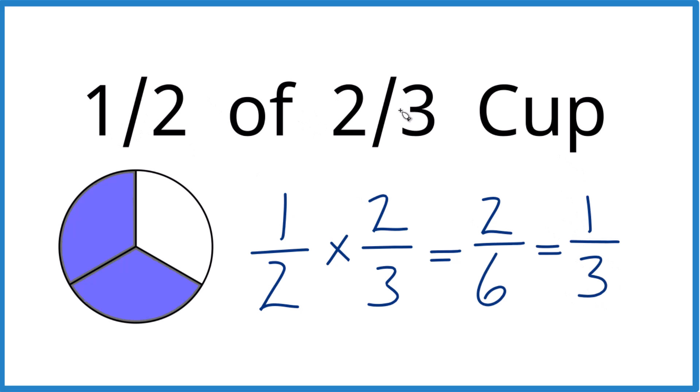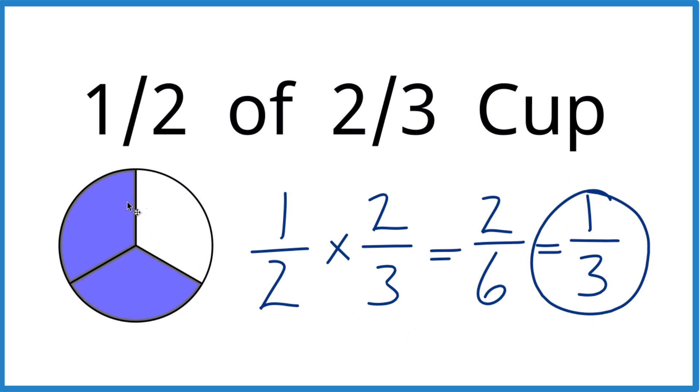So when you take one half of two-thirds of a cup you end up with one-third of a cup. And you can see it right here. Here's our two-thirds, one-two. That's half of it which is just one part out of one-two-three.